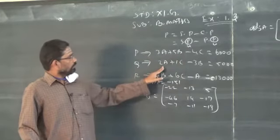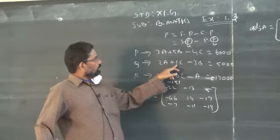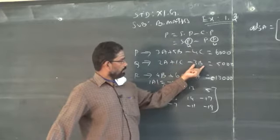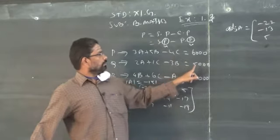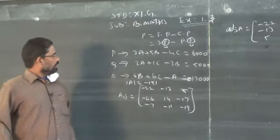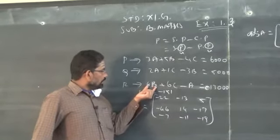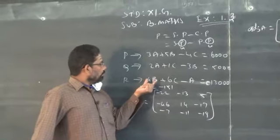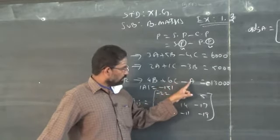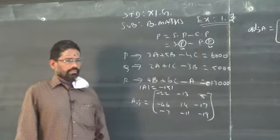Similarly for Q: Q sold 2 units of A and 1 unit of C, so add 2A plus C, and purchased 3 units of B, so minus 3B. Q's earning is given as rupees 5000. For R: R sold 4 units of B and 6 units of C and purchased 1 unit of A. The total earning for R is given as 13000.